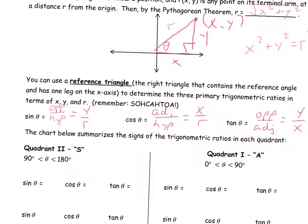We know that the X coordinate could be negative. If we were in quadrant 2, to get out to a point there, X would need to be negative and Y would be positive. So sine would be positive because Y is positive, cos would be negative because X is negative, and tan would be negative because positive Y over negative X gives a negative result. We're going to look at each quadrant and see what happens.